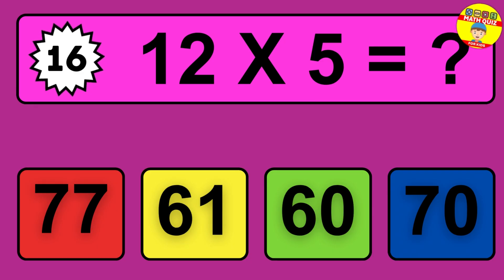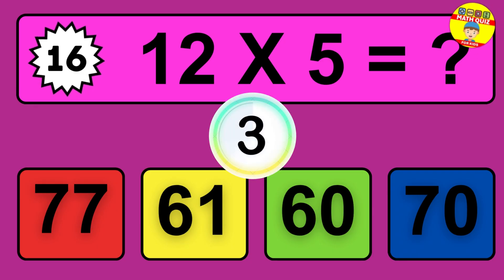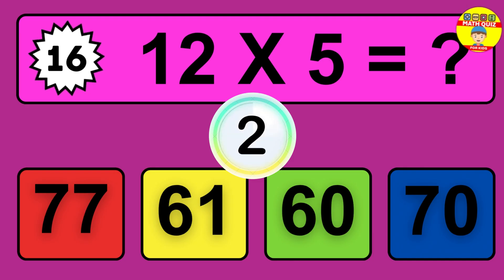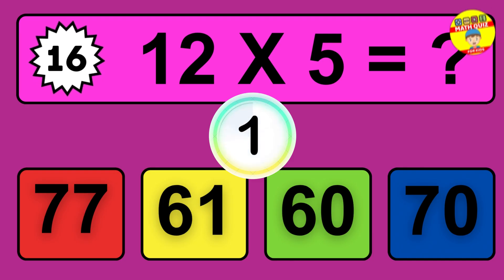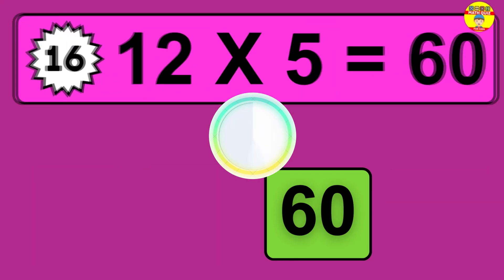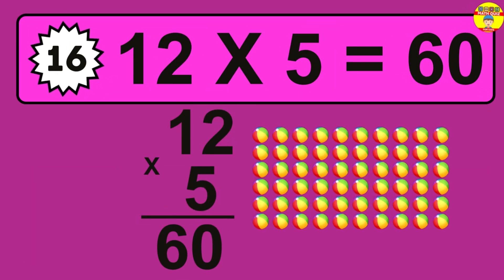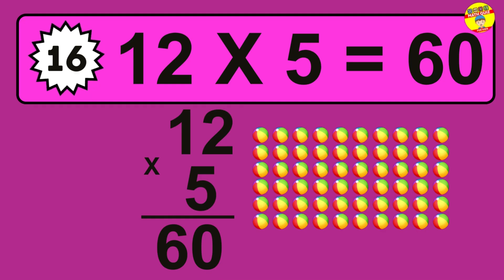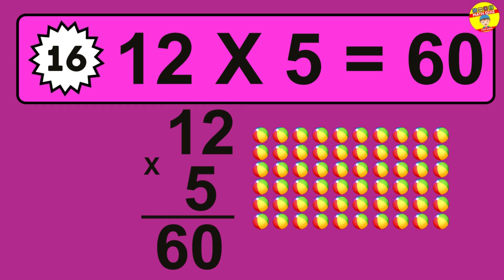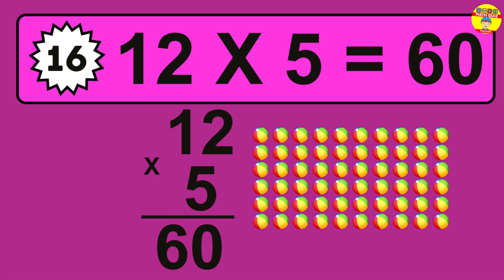Question sixteen: 12 times 5 equals what? The answer is 12 times 5 is 60. To calculate, we have 12 groups with 5 balls each. So how many balls do we have? 60 balls.